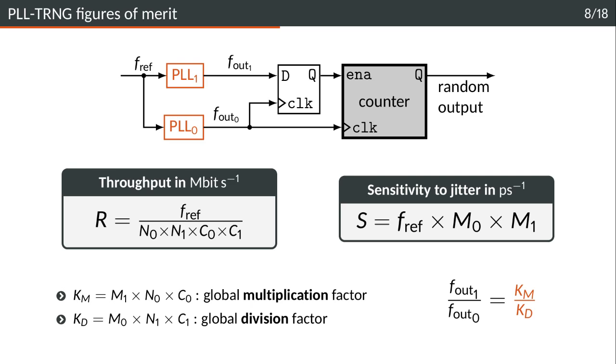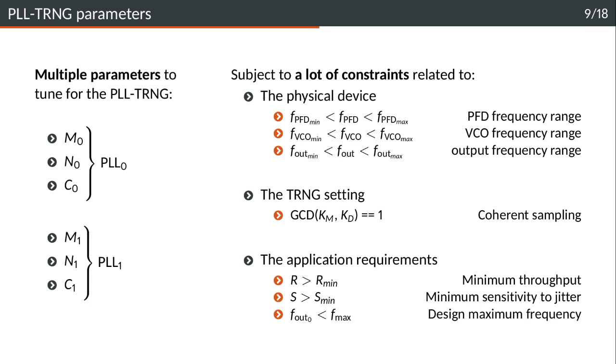We usually define a global multiplication factor and a global division factor KM and KD. Those are interesting because they are directly related to the ratio between F out 1 and F out 0. F out 1 over F out 0 equals KM over KD. So KM and KD will give us the frequency ratio that we need to perform the coherent sampling correctly.